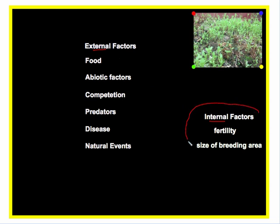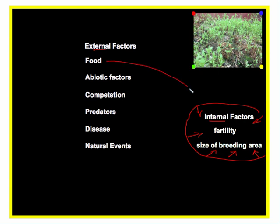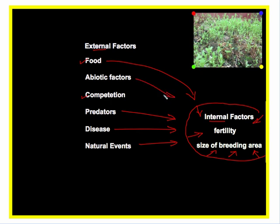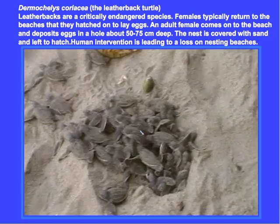Another way of separating limiting factors is internal and external. Internal factors are those internal to a population of a specific organism — for a population of mice, this might include the size of the breeding area or fertility. Competition for food within the population is also an internal factor, though food can also be external since other species compete for it too — that's interspecific competition. Clearly external factors include diseases, natural events, predators, and abiotic factors.